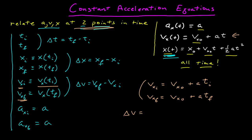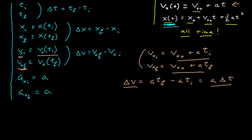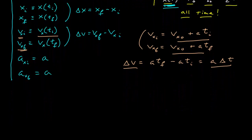Now I can calculate this difference. Delta v, which is v_final minus v_initial — the initial velocities at t equals zero cancel — and I'm just going to get a·t_final minus a·t_initial, which I can factor. I get a times (t_final minus t_initial), which is delta t. So there's my first relationship: delta v equals a·delta t.